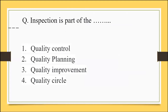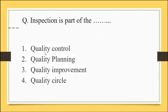Next question: Inspection is a part of — the options are quality control, quality planning, quality improvement, and quality circle. Inspection means careful examination; it is not for planning, not a circle. We eliminate options 3 and 4. Inspection is basically to maintain quality or to control quality, not for quality improvement. So we are going to lock option number 1 as the correct option: quality control.